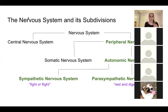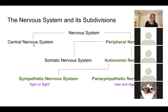I want to ask you all — feel free to unmute or put it in the chat — why are these phrases paired with these divisions? Why do we say fight or flight when referring to the sympathetic nervous system, or rest and digest when referring to the parasympathetic?